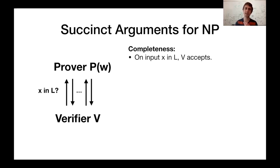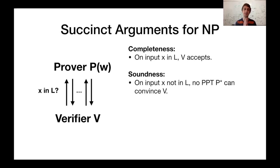What we require from succinct arguments is first that of completeness, which says if the statement x given as input to the protocol is in the language, then the verifier will accept. Second, the standard soundness notion says that if x is not in the language, then no cheating prover p* can convince the verifier, at least with noticeable probability.